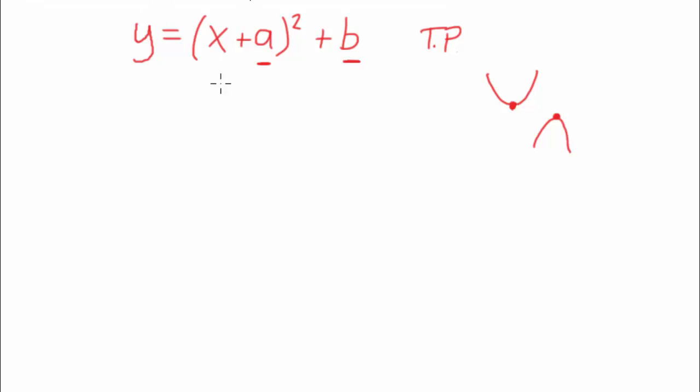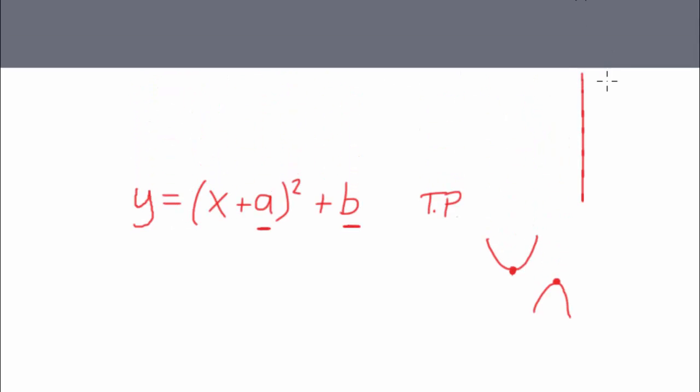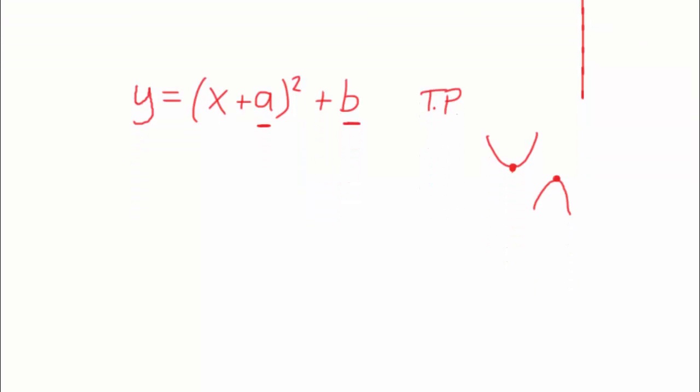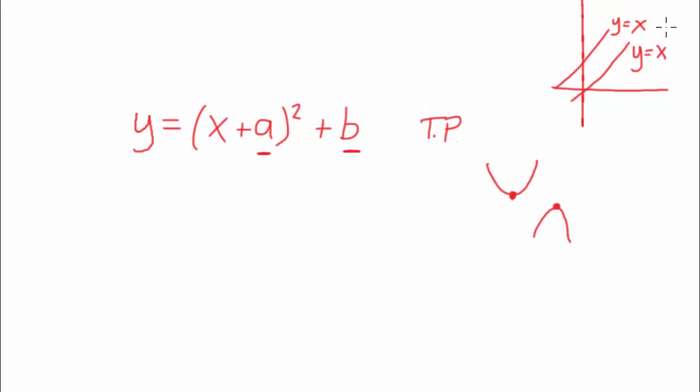What you'll find is, remember when we're doing straight lines, when we're doing straight line graphs, you'd have found that was like y equals x. If I went y equals maybe x plus 2, that shifted it up the y axis by 2. And it's the same as this. This number represents the y value of the turning point.